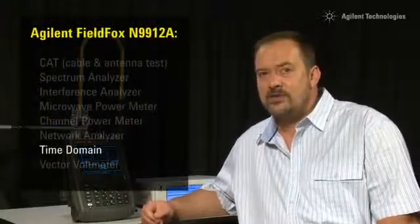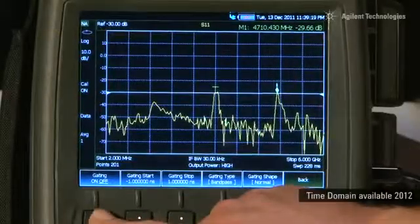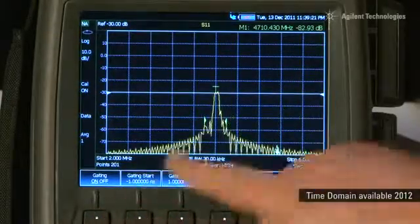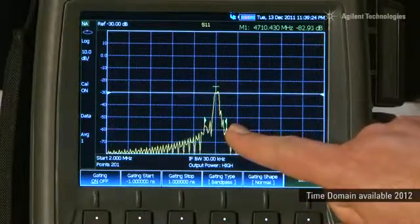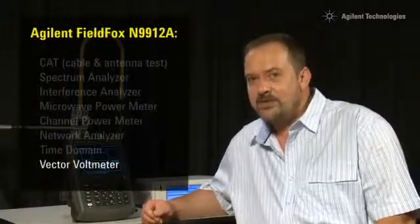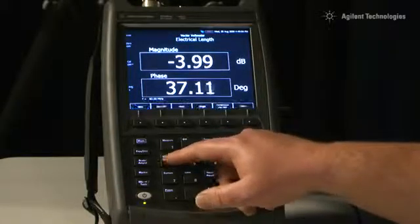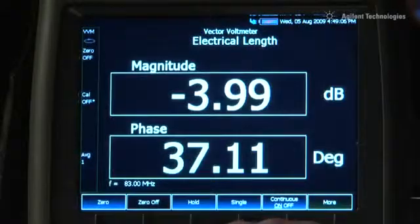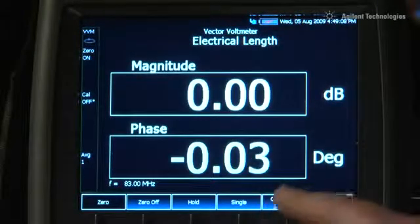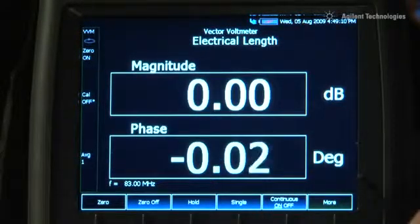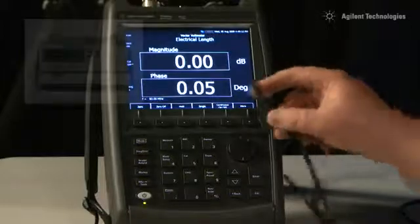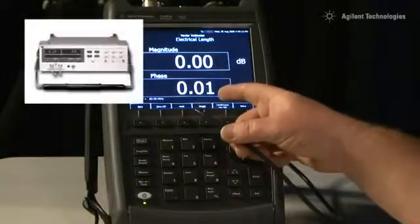And with the new time domain option, you can even make time domain measurements of these same devices, just like on a bench VNA. The vector voltmeter option lets us compare the electrical length of devices. For example, we can accurately phase-trim cables for radar and direction-finding systems, producing matched pairs with the same electrical length and phase delay, just like we did with the old HP8508A vector voltmeter.